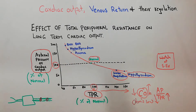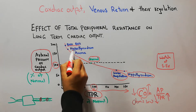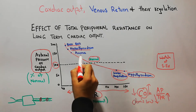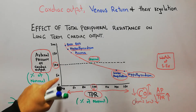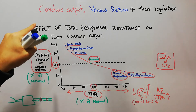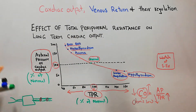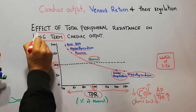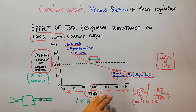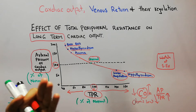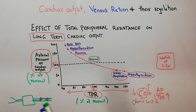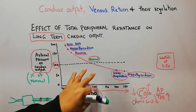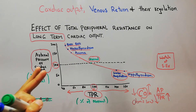If total peripheral resistance decreases — for example in conditions like beriberi, hyperthyroidism (the opposite of hypothyroidism), or anemia — then cardiac output starts increasing. However, it is important to note that this effect of total peripheral resistance on cardiac output is a long-term process. The total peripheral resistance must remain high or low for a very long time, in a chronic condition, for the cardiac output to follow in the reverse direction.